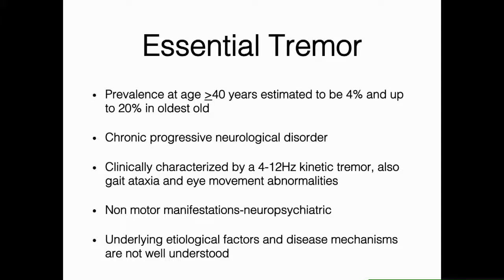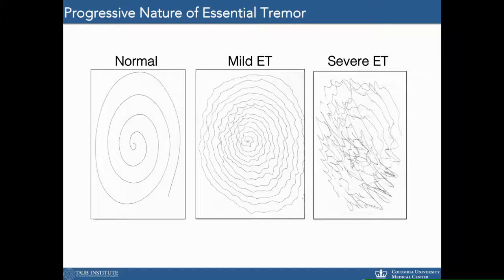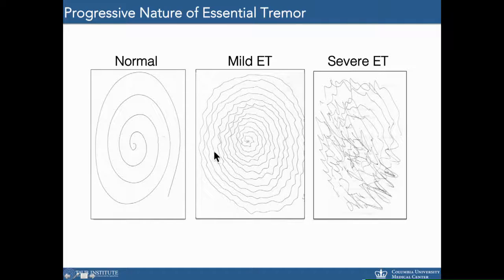Currently, the underlying etiological factors are not well understood, and the disease mechanisms have not really been studied. Shown here are some examples of hand-drawn spirals, which is one of the methods used in the rating of essential tremor by neurologists. We have on the left-hand panel a normal spiral drawn by an unaffected individual, an individual with mild essential tremor in the center, and an example of a spiral from an individual with severe essential tremor.